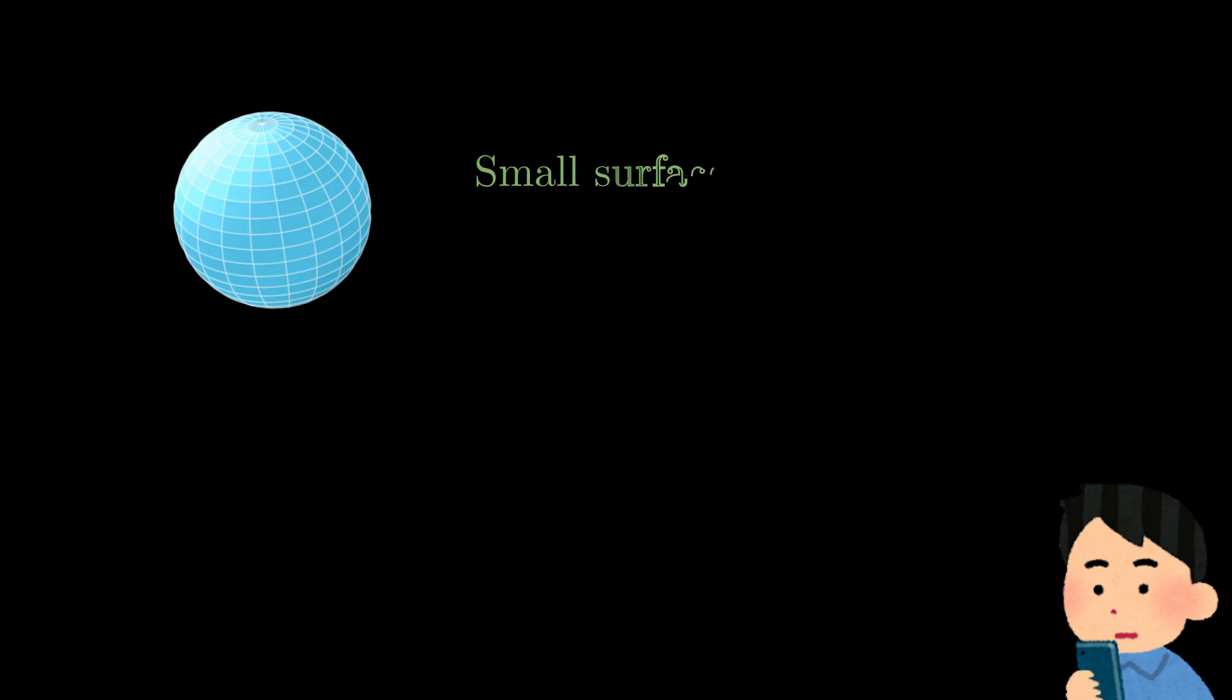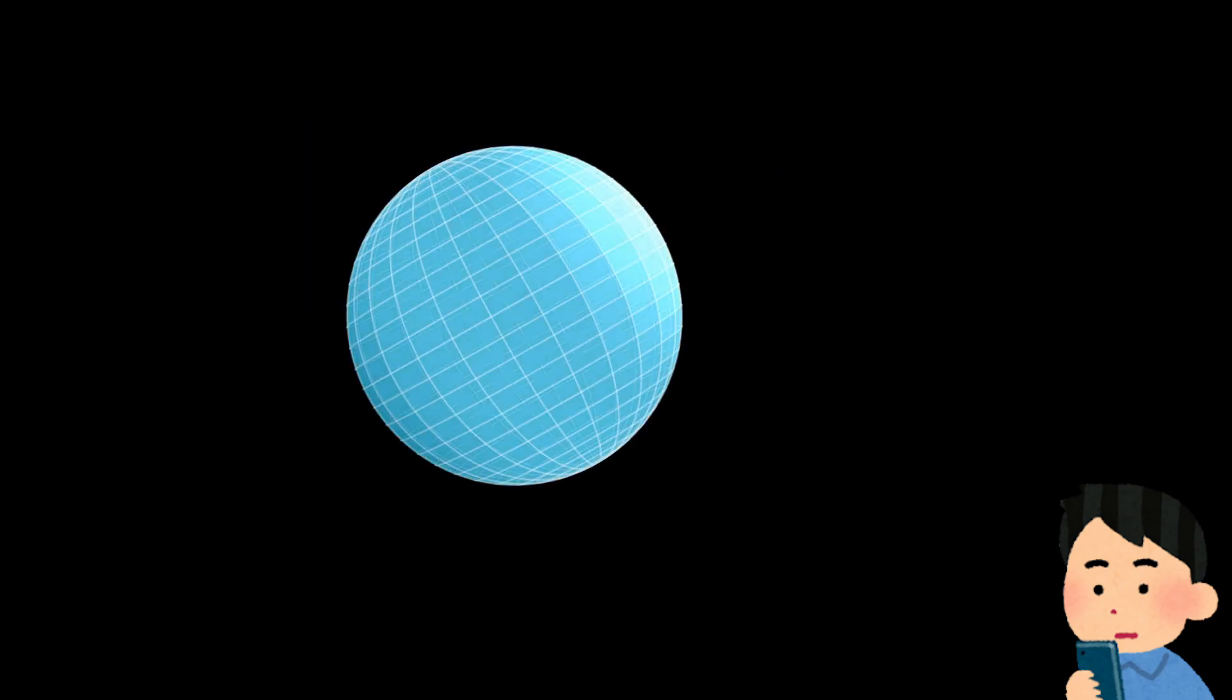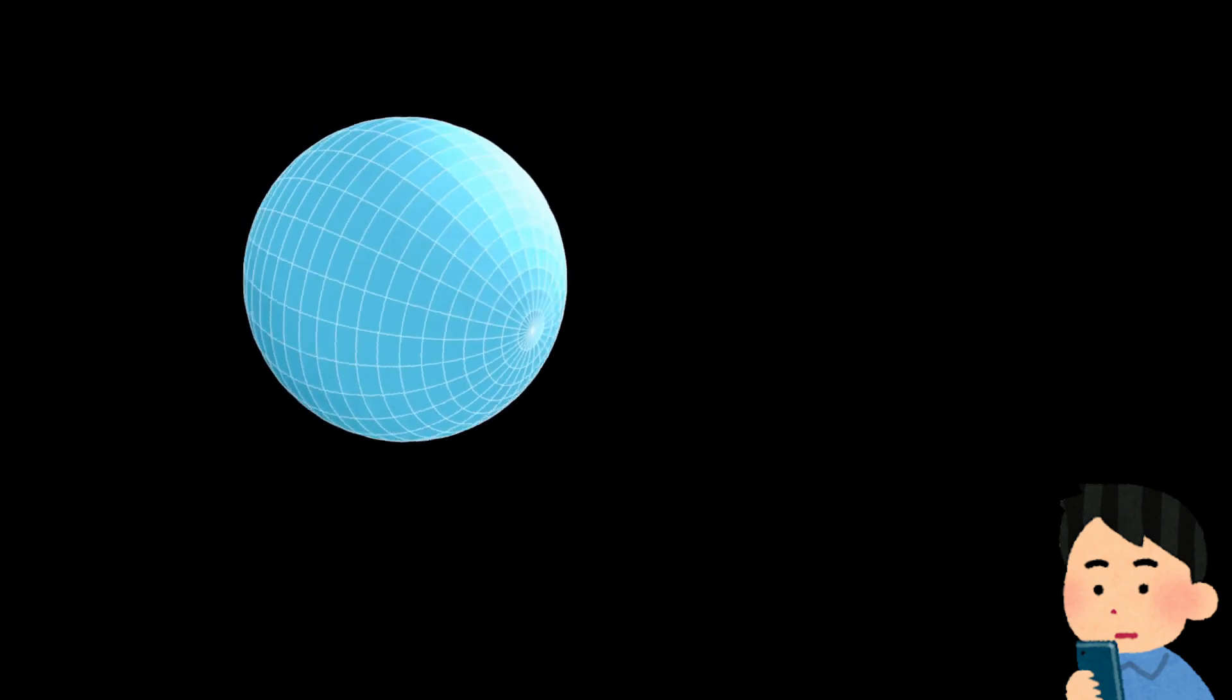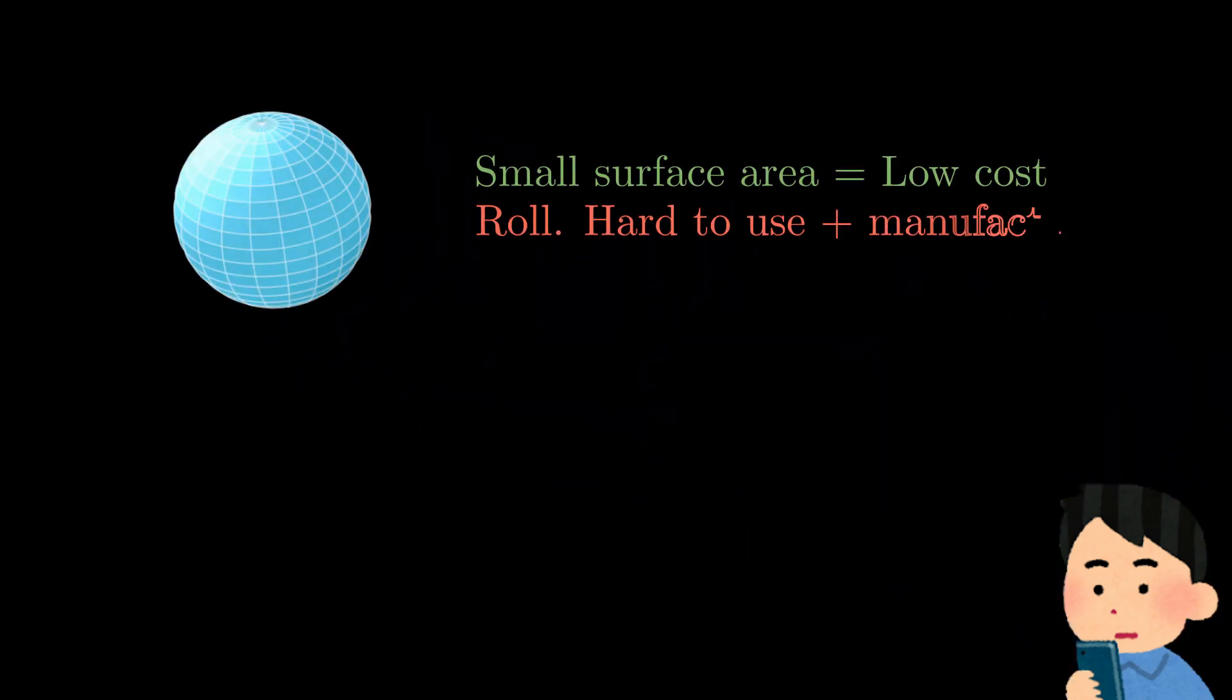First, let's take a look at the sphere, which is the shape with the least possible surface area for a given volume. However, some of their downsides are they are easy to just roll off the table, they are hard to drink or eat from, and they are also hard to manufacture properly.